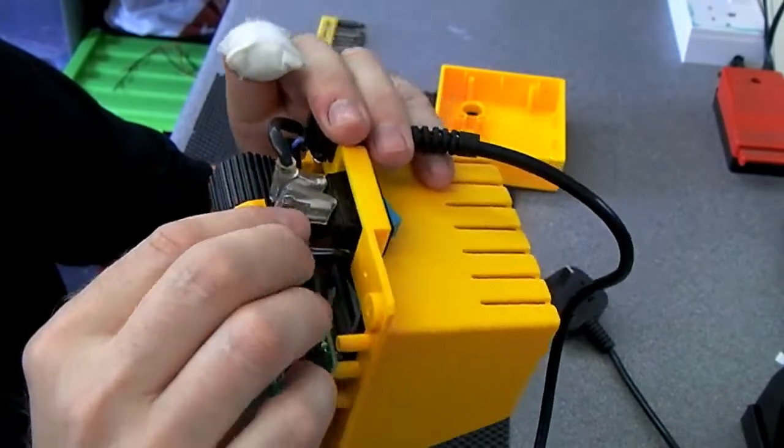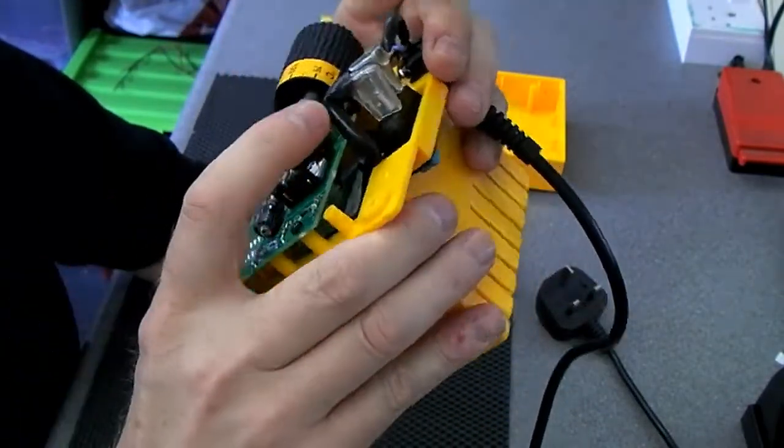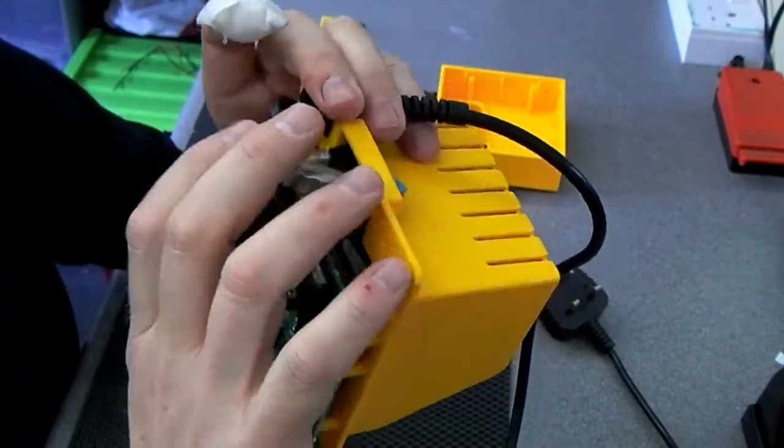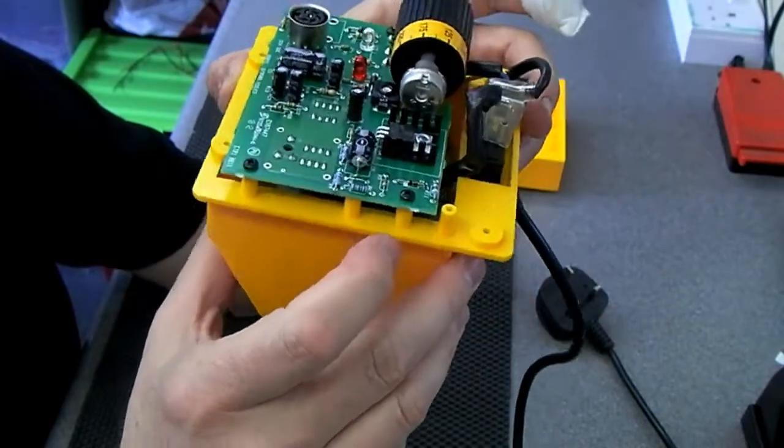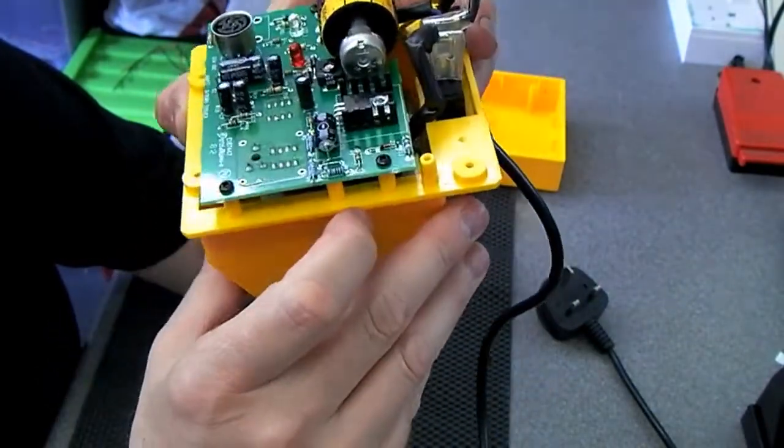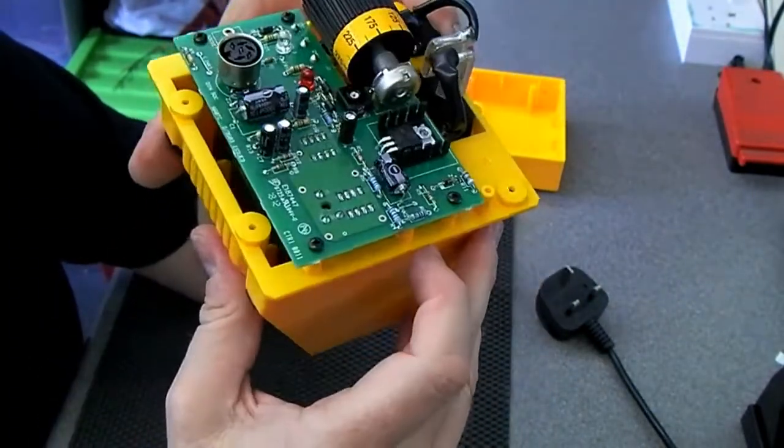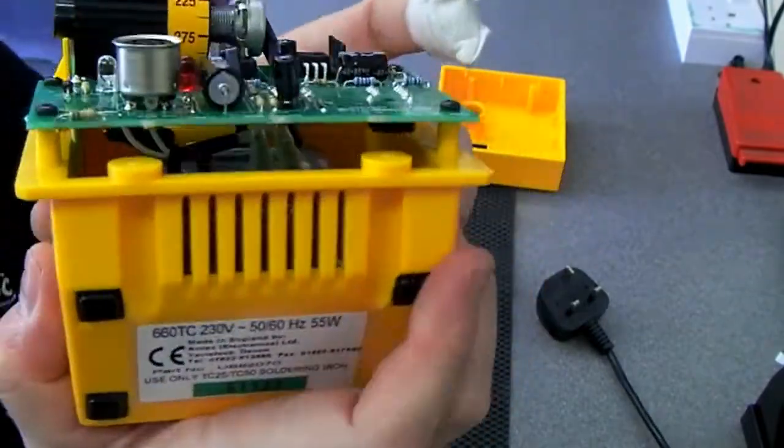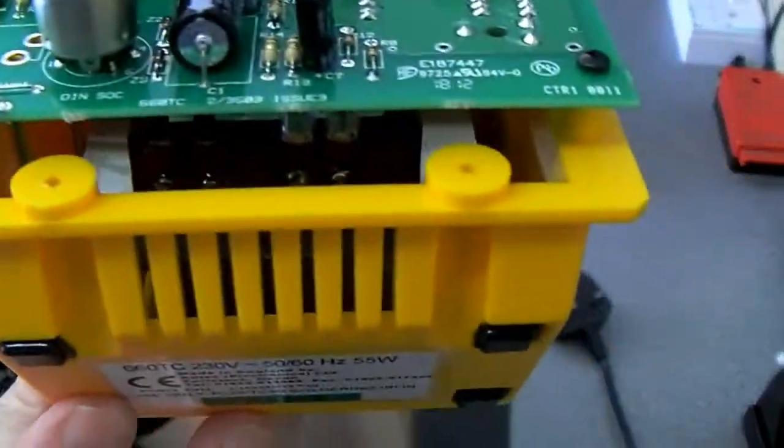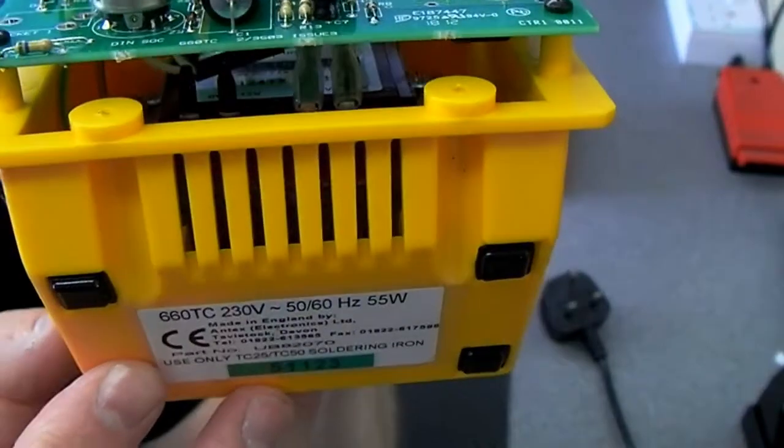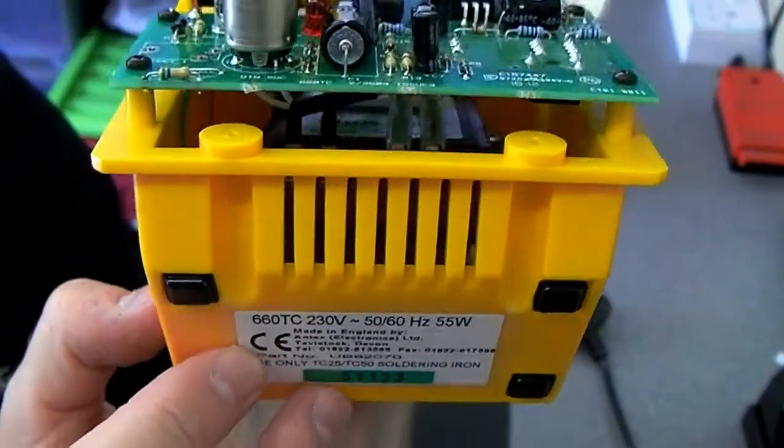A nice bit of fiber tubing on each of the mains connections and they go off to equally nice connections on the transformer in there. Again, I don't know that you'll see this and I don't intend taking the board off. I don't think I'm going to be worrying that much.